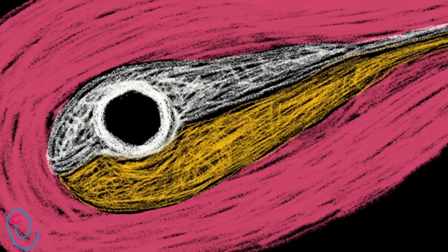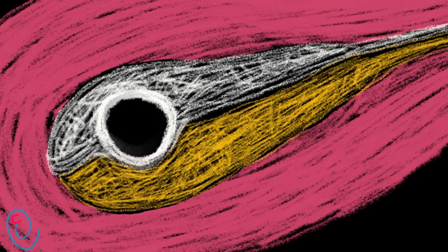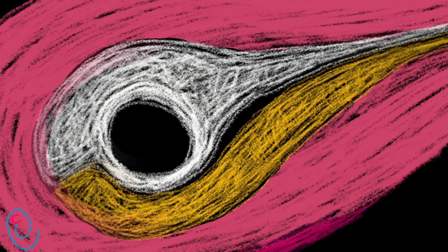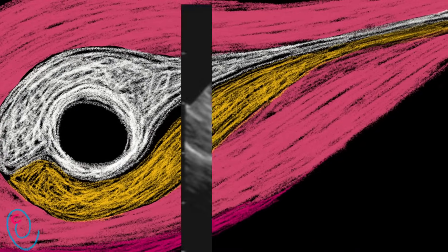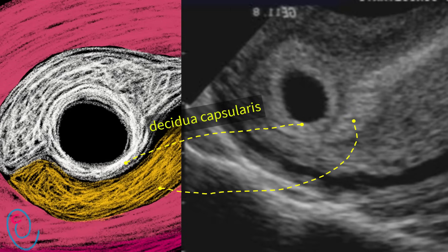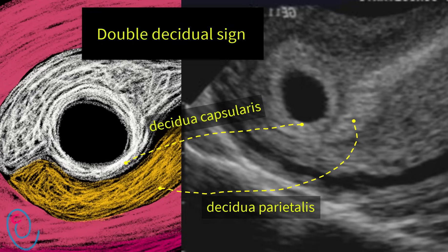The gestational sac will grow, and as it grows it will distort the uterine cavity. Consequently, the gestational sac will appear surrounded by two layers of decidua: the inner one formed by the decidua capsularis, and the outer one formed by the decidua parietalis. This is known as the double-decidual sign.